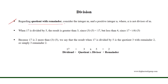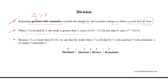Regarding the quotient with a remainder, consider the integer m and the positive integer n, where n is not a divisor of m. For example, when 17 is divided by 5, the result is greater than 3, since 3 times 5, that is 15, is less than 17.